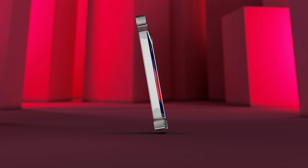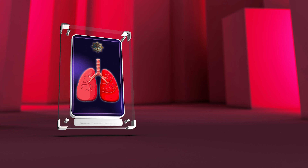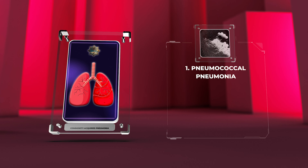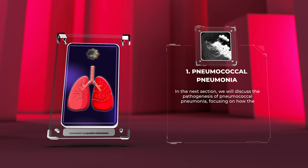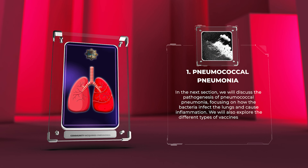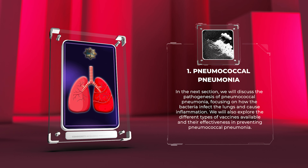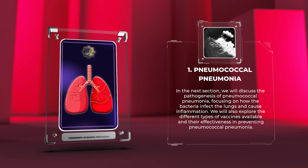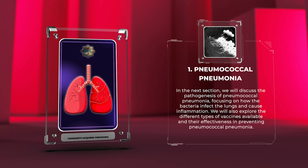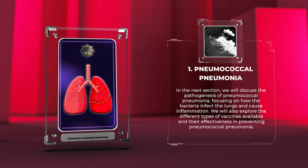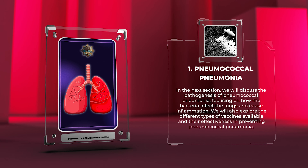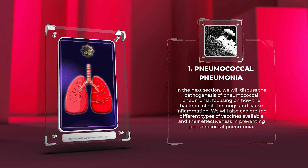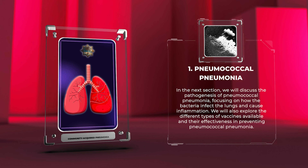In the next section, we will discuss the pathogenesis of pneumococcal pneumonia, focusing on how the bacteria infect the lungs and cause inflammation. We will also explore the different types of vaccines available and their effectiveness in preventing pneumococcal pneumonia.